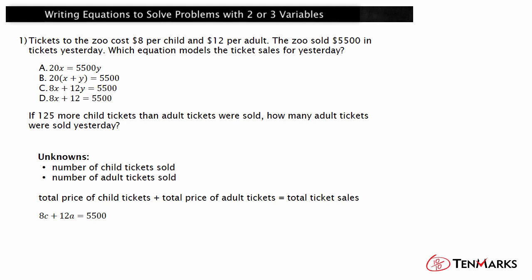The choices use the variables X and Y. You don't know which variable is for child tickets and which is for adult tickets, but you can look to see which matches the equation you wrote. The third choice, 8X plus 12Y equals $5,500, is correct. In this case, X is the number of child tickets sold and Y is the number of adult tickets sold.